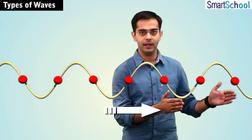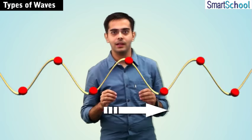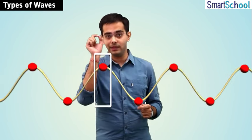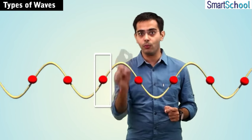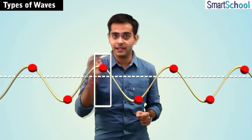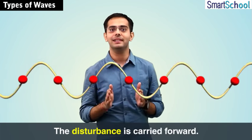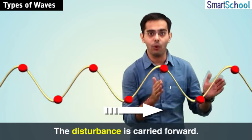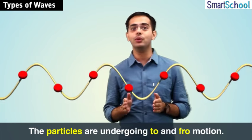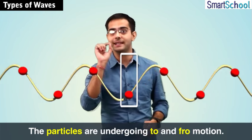Similarly, we can take an example of a rope. The disturbance travels through the rope. If you carefully observe the rope, you will notice that the red dots present on the rope keep on undergoing to-and-fro motion about their mean position, while the disturbance keeps on traveling forward through the rope. So it is concluded that it is the disturbance that is carried forward, but the particles of the medium are undergoing to-and-fro motion only, about their mean position.